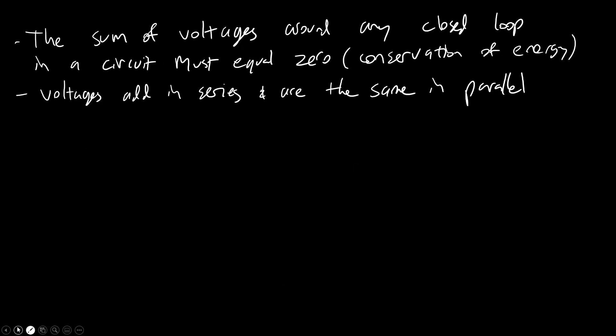So again, looking at the written out textbook definition, the sum of voltages around any closed loop in a circuit must equal zero. And you can think about this as a form of conservation of energy as opposed to conservation of charge for Kirchhoff's current law.